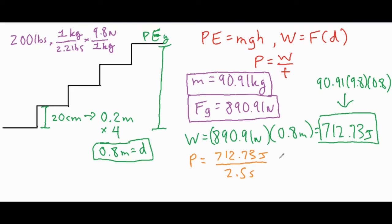So if we put in two and a half seconds, then we have a value that is 285.09 watts. So that is how many joules per second of energy you are releasing as you run up that flight of stairs.